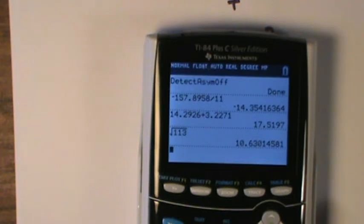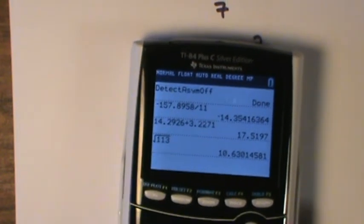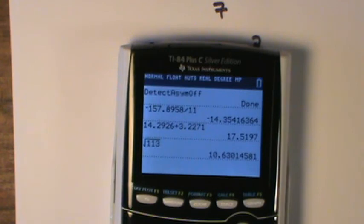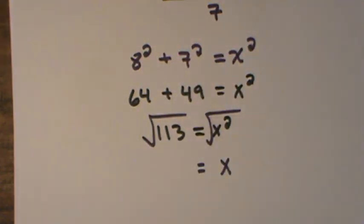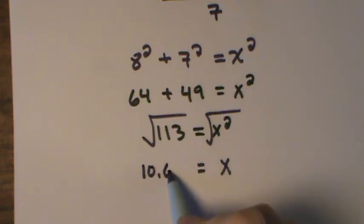It tells me 10.6301 and so forth. I'll round it to 10.63, so this is approximately equal to 10.63.